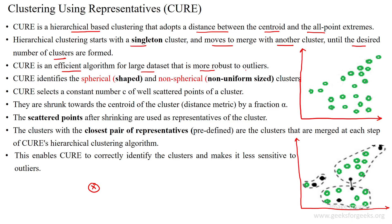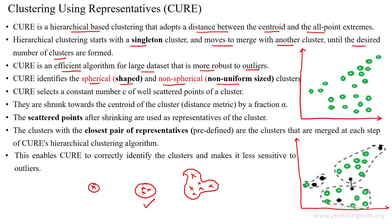CURE is more robust in handling outliers. CURE identifies both spherical-shaped clusters and non-spherical or non-uniform size clusters. That means the data points sometimes will have spherical shape clusters and sometimes non-spherical shape clusters. The traditional clustering algorithm handles only spherical shape clusters, but CURE handles even non-spherical shape clusters.